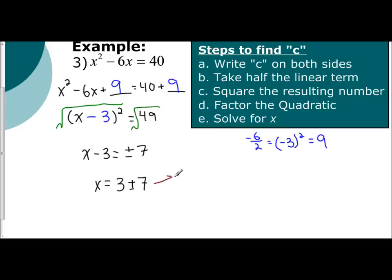There's two of them. One where x is equal to 3 plus 7, which is 10. And one where x is equal to 3 minus 7, which is negative 4. So x equals negative 4 or 10.